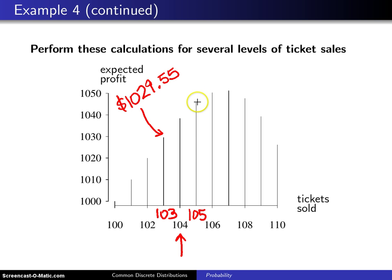And the same is true for 106 and 107. At 107 you get the maximum value here and so from the corporation's perspective they would want to sell 107 tickets to maximize their expected profit.